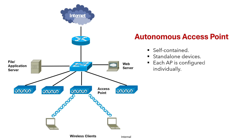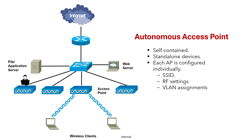In an autonomous deployment, each AP is configured individually — including SSID, RF settings, and VLAN assignments. For example, if you have four APs in your network, you need to configure each one individually and separately. As the network grows, managing access points individually can become time-consuming and inefficient. This model is great for small networks like a small office or home office with just one to three APs.